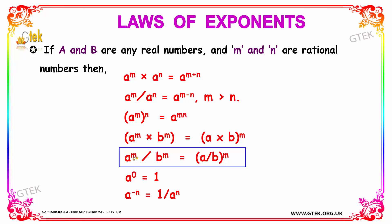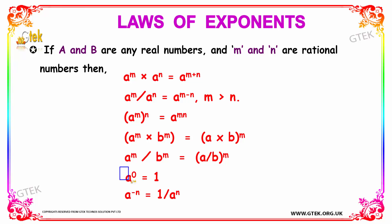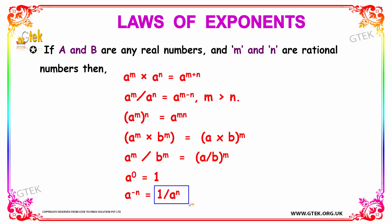Base a exponent m divided by base b exponent m equals a divided by b, raised to the power m. Also, base a to the exponent 0 equals 1. Base a to the exponent minus n equals 1 divided by a to the exponent n. Based on these laws of exponents, let's see some example problems.